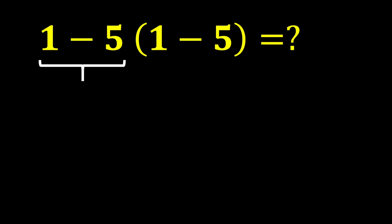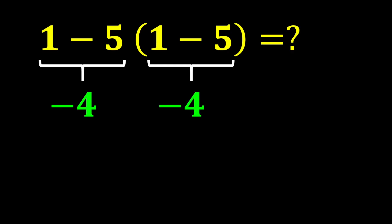1 minus 5 gives us negative 4, and again inside the parentheses 1 minus 5 gives us negative 4. In the end, negative 4 multiplied by negative 4 gives us 16.